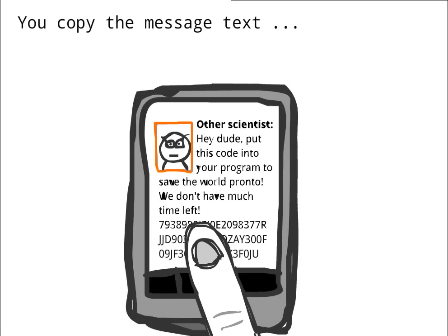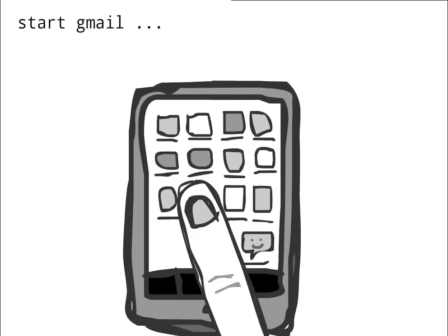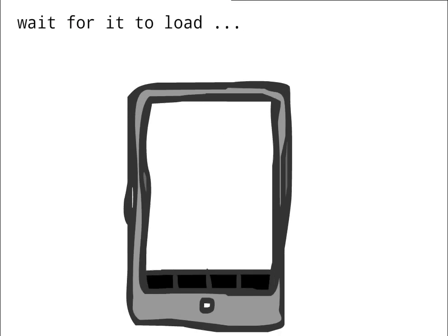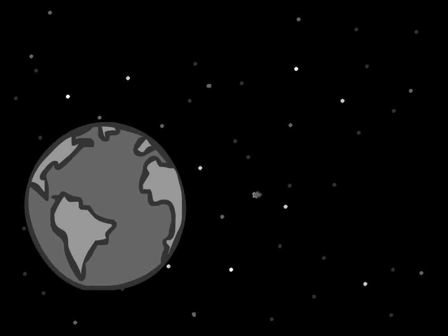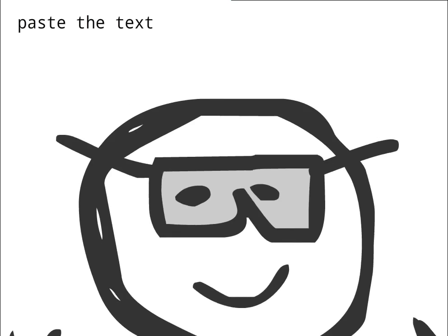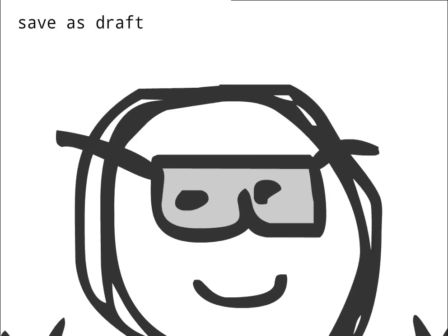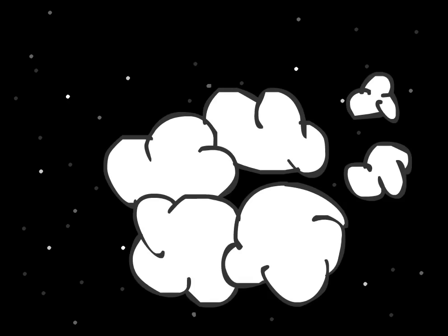You copy the message text, start Gmail, wait for it to load, compose a new message, long press the input field, paste the text, save as a draft, open your browser, surf to Gmail, mail.